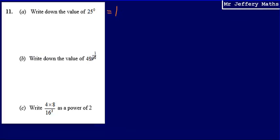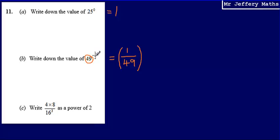Question b, we're asked to write down the value of 49 to the power of a negative half. The first thing to note here is that if we have a negative power, then in order to work this out, we're going to have to take the reciprocal of the base. Our base here is 49, and the reciprocal of 49 would be 1 over 49. By taking the reciprocal, that removes the negative power.